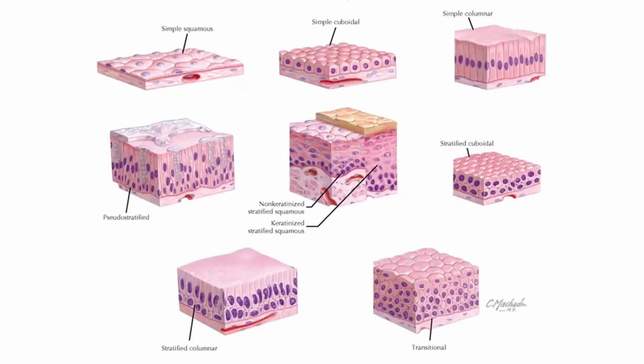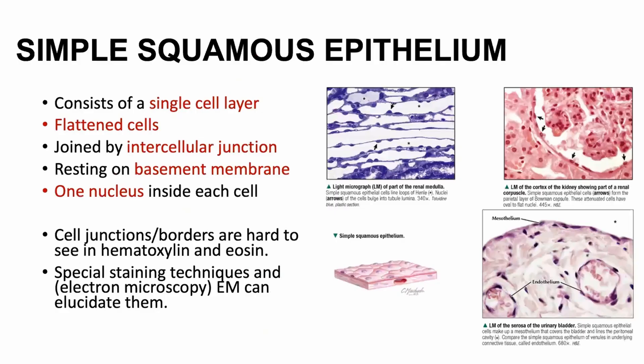Imagine in the gastrointestinal system you have simple columnar epithelium with one cell layer, just for absorption. When you reach the anus getting outside, you don't need that epithelium anymore. Biology just makes common sense — you're getting into a different territory, you need to change. So the epithelium literally changes completely in order to facilitate passage of whatever is needed. You definitely need a different type of epithelium for that function.